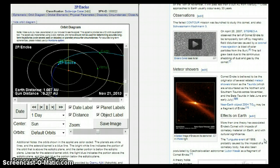Now comet Encke is believed to be the originator of several related meteor showers known as the Taurids, which are encountered as the northern and southern Taurids across November and the Beta Taurids in late June and early July. So keep that in mind if you see a meteorite shower, you're going to know what's causing it.